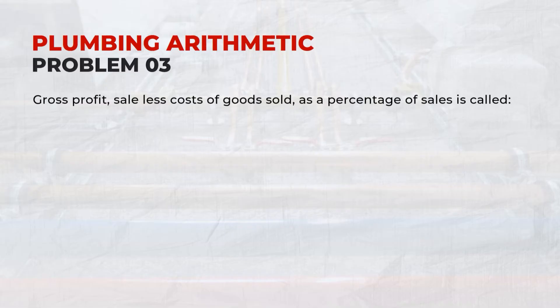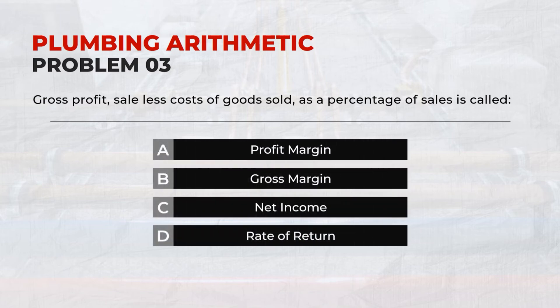Gross profit — sales less costs of goods sold — as a percentage of sales is called: B. Gross Margin.